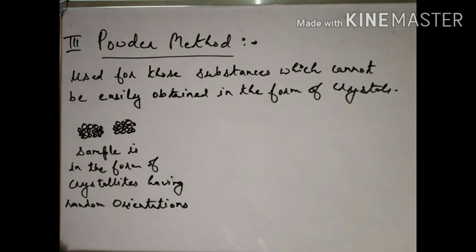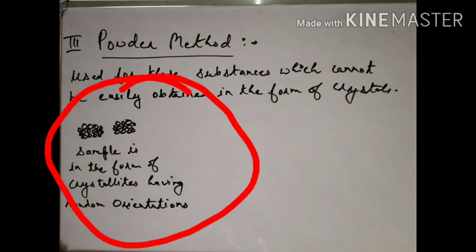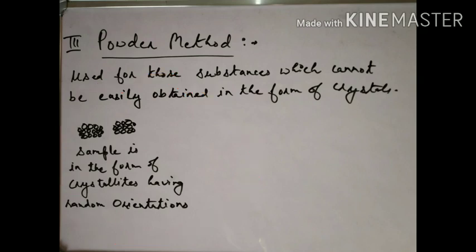The random orientations of crystallites mean that d (the spacing) is also not fixed — it varies. Because the specimen is in powder form rather than single crystal form, it is made up of so many crystallites, each with their own orientation and size. Some crystallites will have small spacing, some large. So in the powder method, d also varies. In this method, lambda is fixed (monochromatic X-rays), but both d and theta vary.